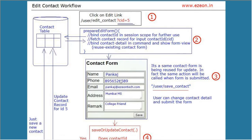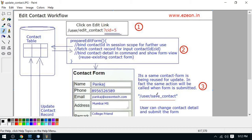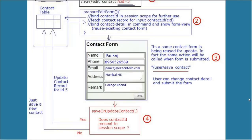Now the user will see the existing details and can modify them. Once the data is modified and all the modifications are done, the user will click on save and a method will be called — save or update. I am going to use a common method for both save and update. How do I decide when to save or when to update? I will check for the existence of the contact ID in the session scope. If the contact ID is already present in the session scope, we are going to update the record. And if the contact ID does not exist in the session scope, we have to treat the complete record as a new record. So we will do the save operation when there is no contact ID, and if the contact ID is present in the session, we are going to update the data.